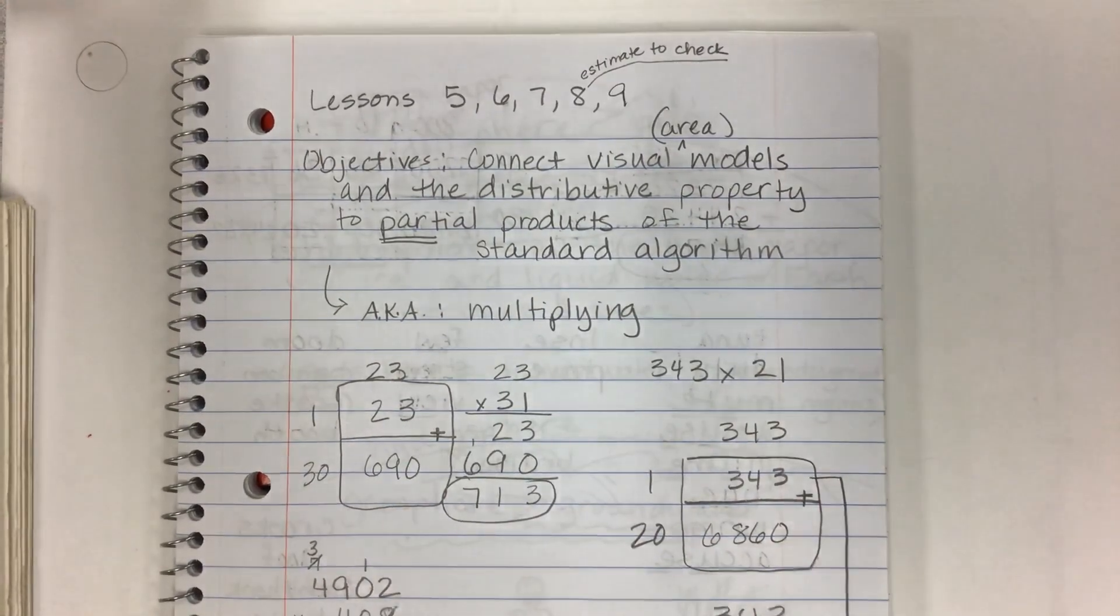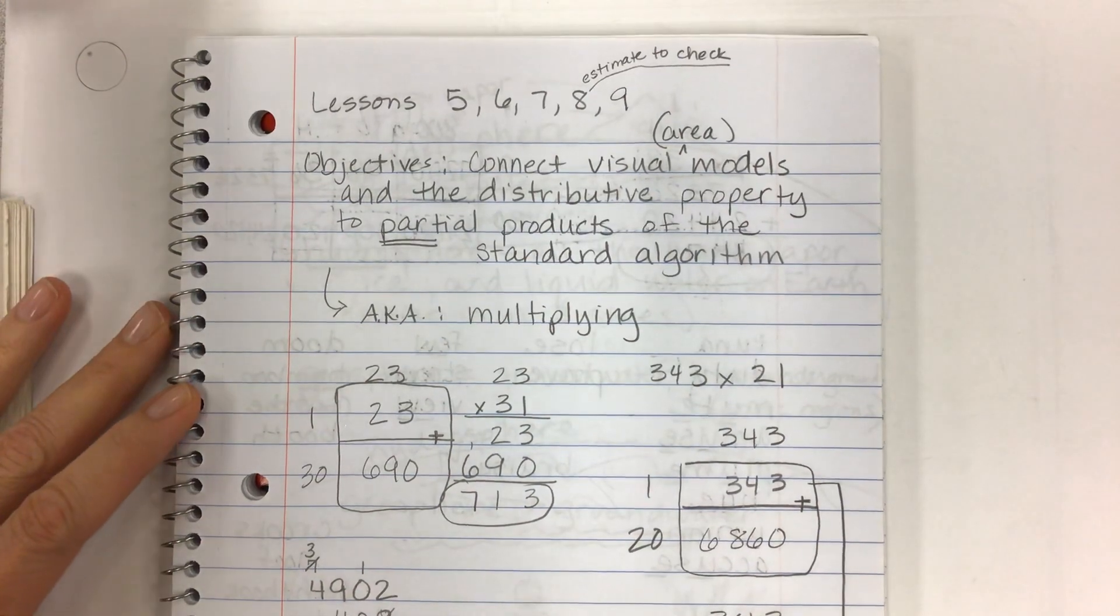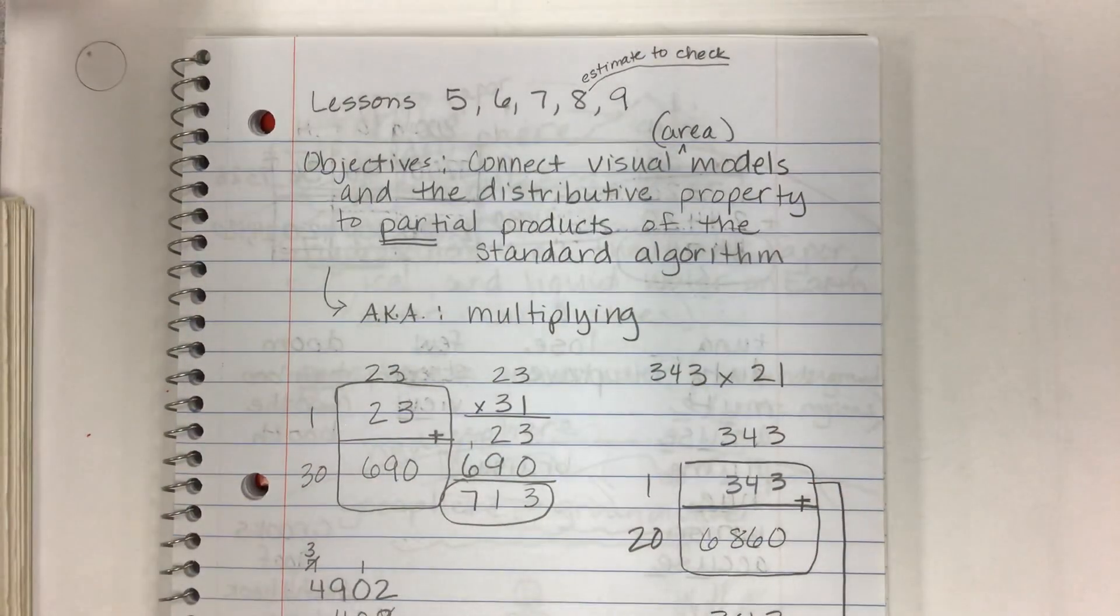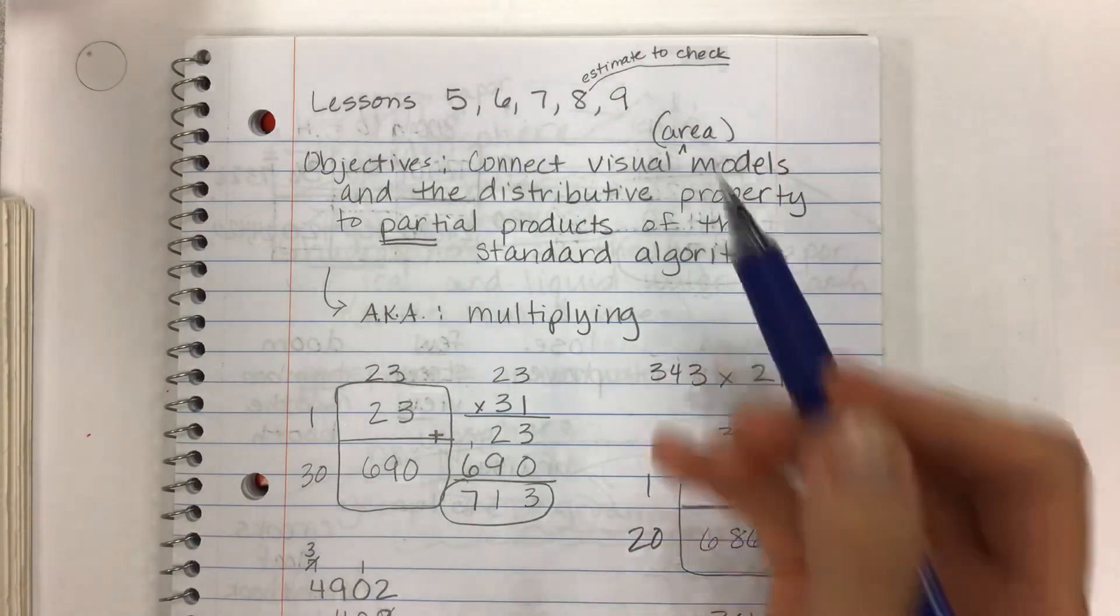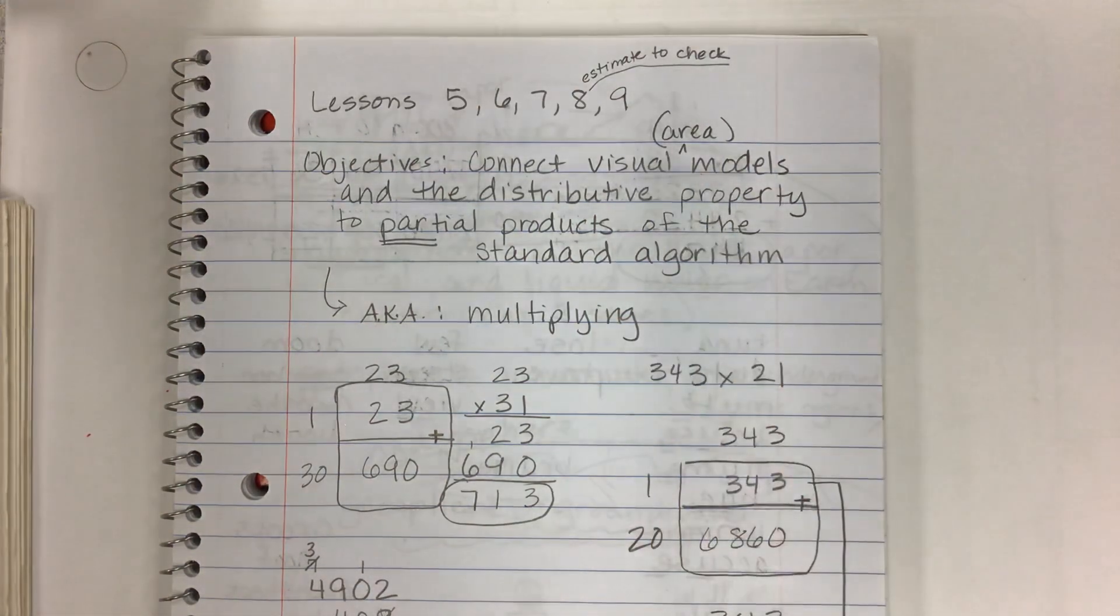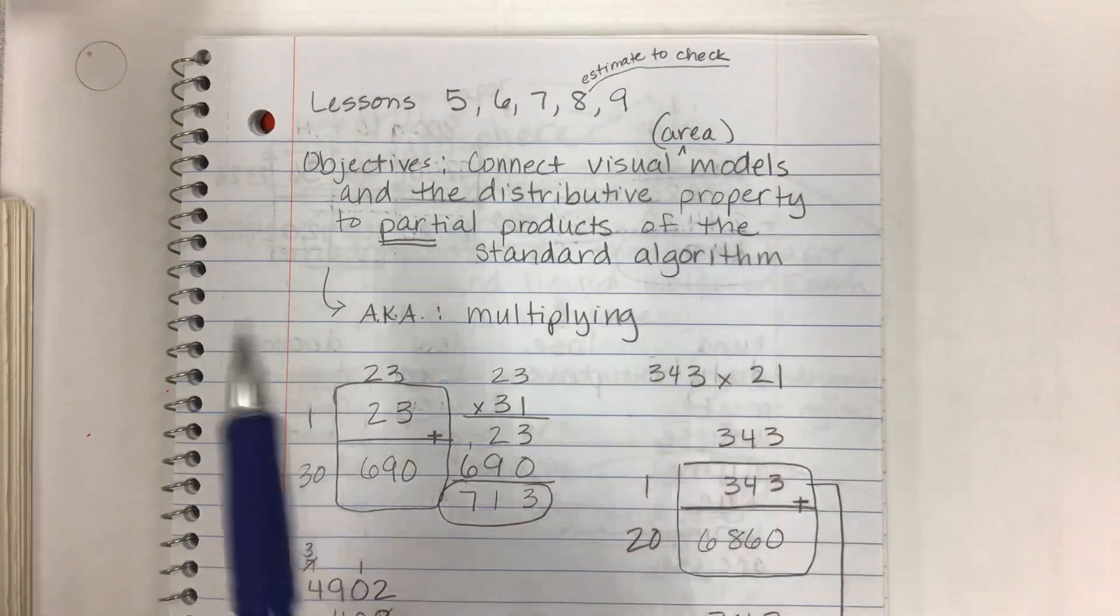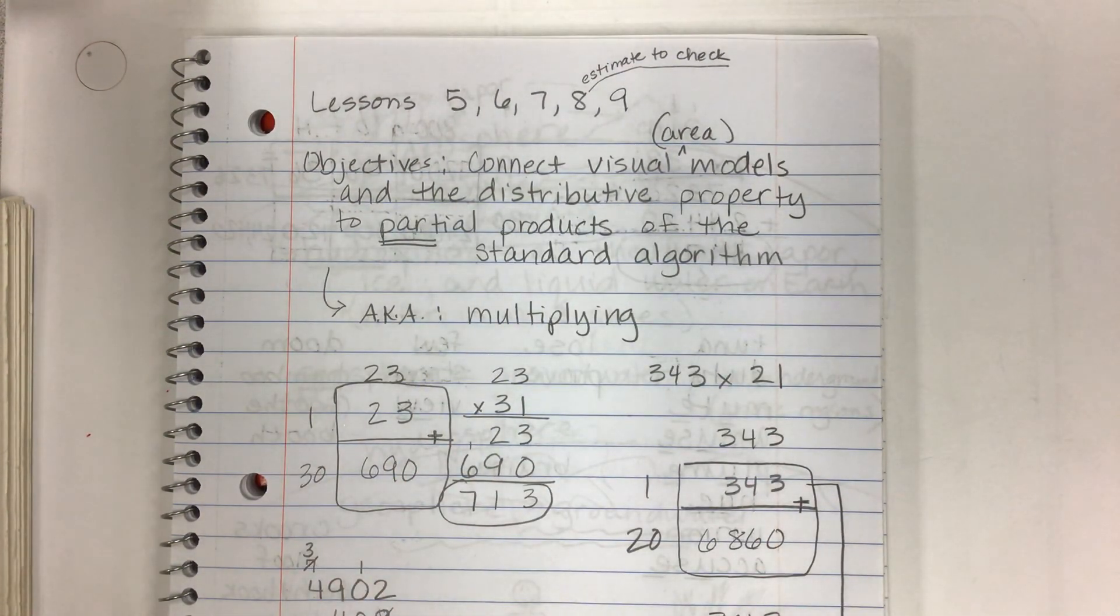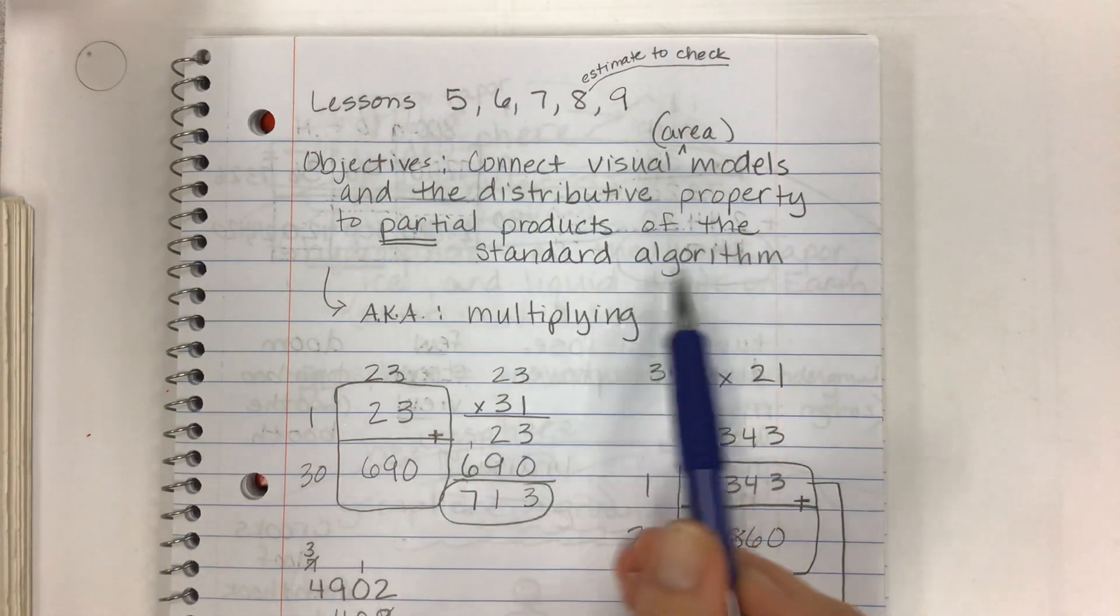Hey kiddos! Okay, so we're still in module 2 and as you can see from our objective list up here, we're starting to multiply and use the standard algorithm in multiplication. We're going to estimate to check when we get into division and do multiplication to check our division too. So connecting visual or area models and using the distributive property to figure out what the partial products are when using the standard algorithm.